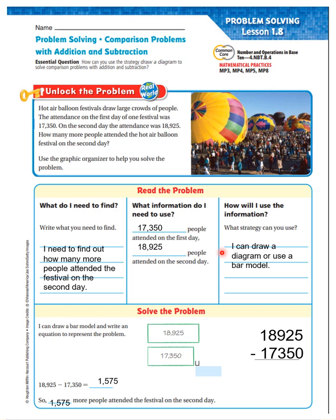How will I use the information? What strategy can I use? I can draw a diagram or use a bar model. This is the bar model — they've put the higher number on top and the lower number on the bottom. The lower number has a smaller bar than the bigger number. There's a little U-type bracket that shows one is larger than the other. I can draw a bar model and write an equation to represent the problem. So I wrote 18,925 here and 17,350 there, then I wrote the equation, and now we're going to solve it.